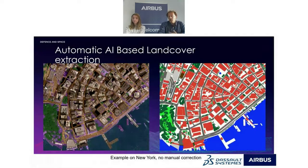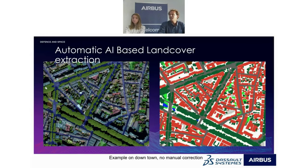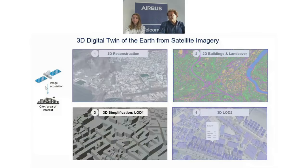Here you may not recognize it, but this is Manhattan — it looks like a small city when viewed from the sky. The land use is automatically produced and will be very helpful for the simulation. Another example over the city of Lyon, where you have trees, buildings, and so on.